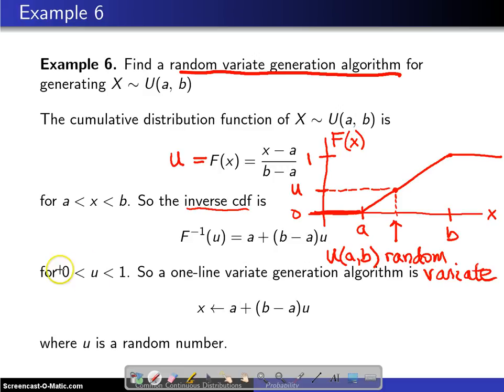So once you have that which is defined for u values between zero and one, a one line random variate generation algorithm is x equals and you simply put in this inverse cumulative distribution function where u is some random number.